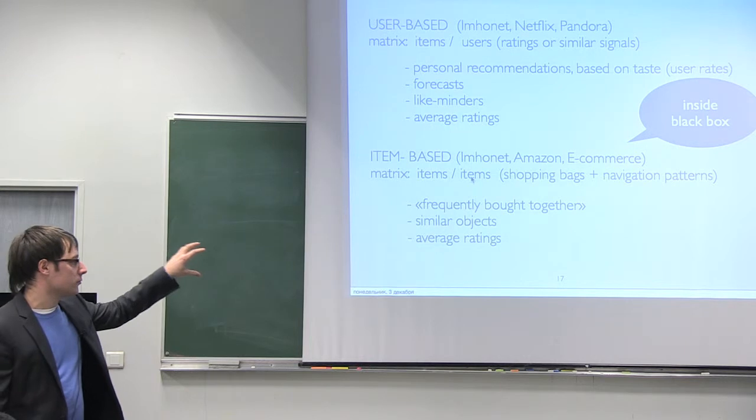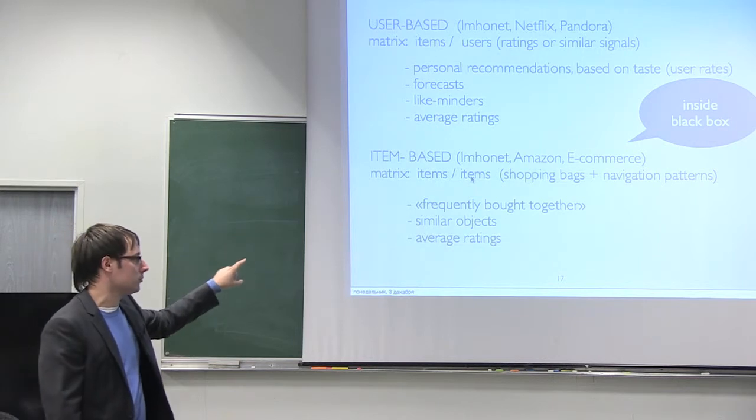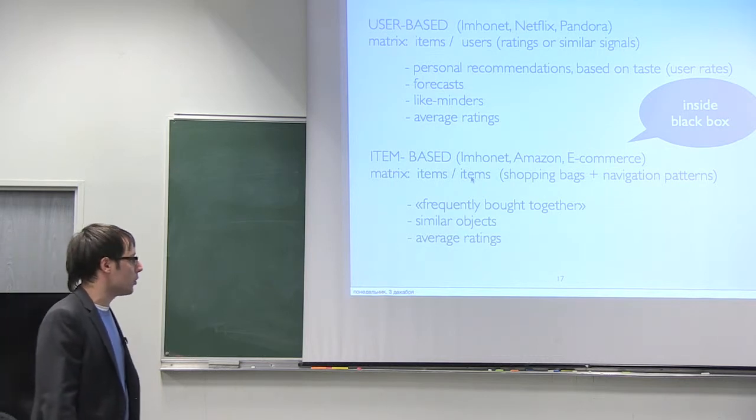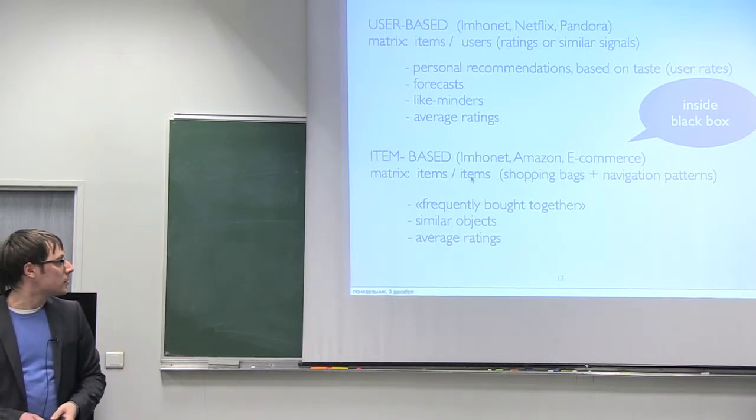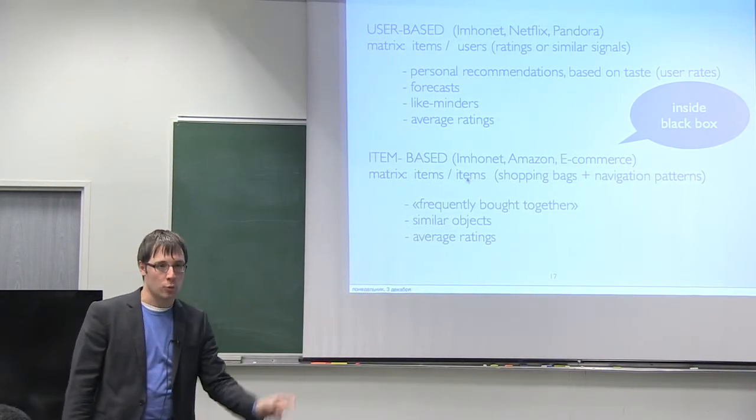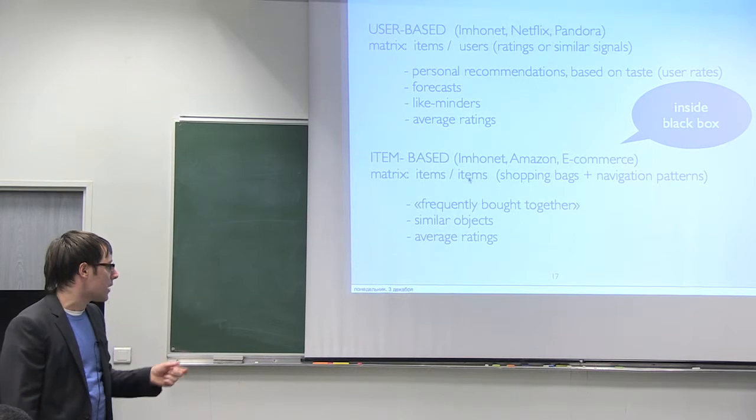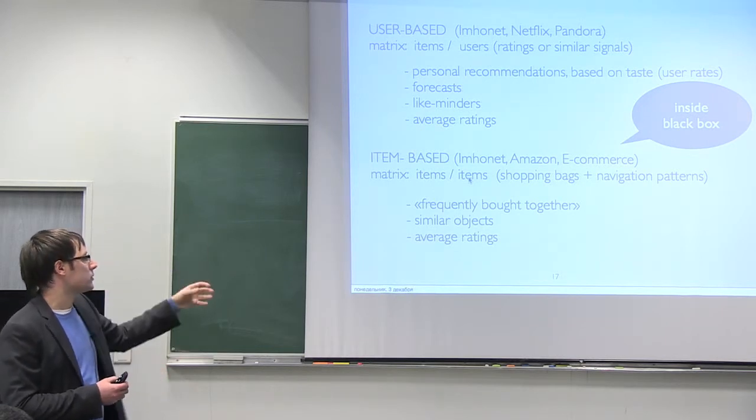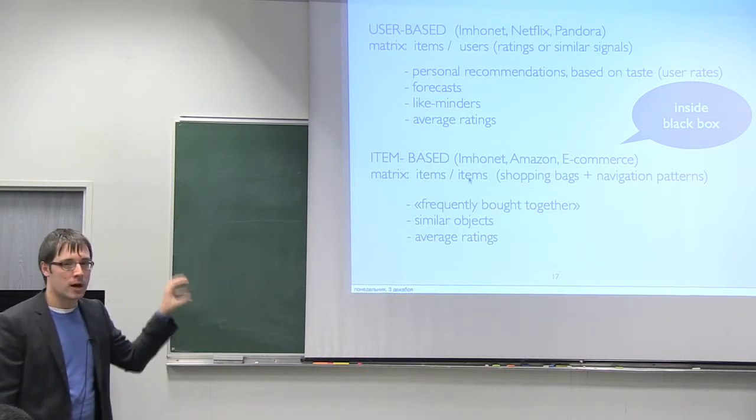The other part of collaborative filtering is item-based. It's very popular among e-commerce sites like Amazon and different e-commerce shops. It's based on metrics item to item. It analyzes shopping bags and navigation patterns and can provide frequently bought together items, similar objects, and average ratings. We try to take the best out of these two kinds. We take user-based and also add value from the item-based technology.